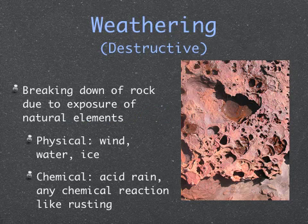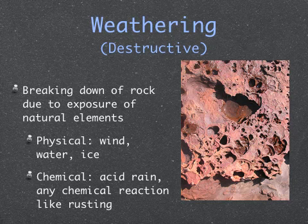Now we're going to be talking about destructive forces — these are forces that destroy our landforms. A good example of a destructive force is weathering, which is the breaking down of rock due to exposure to natural elements. There are two different types of weathering: physical weathering and chemical weathering. Physical weathering can include forces like wind, water, and ice. Chemical weathering is a little different — it's an actual chemical reaction between a certain substance and the rock itself, or the minerals within that rock.